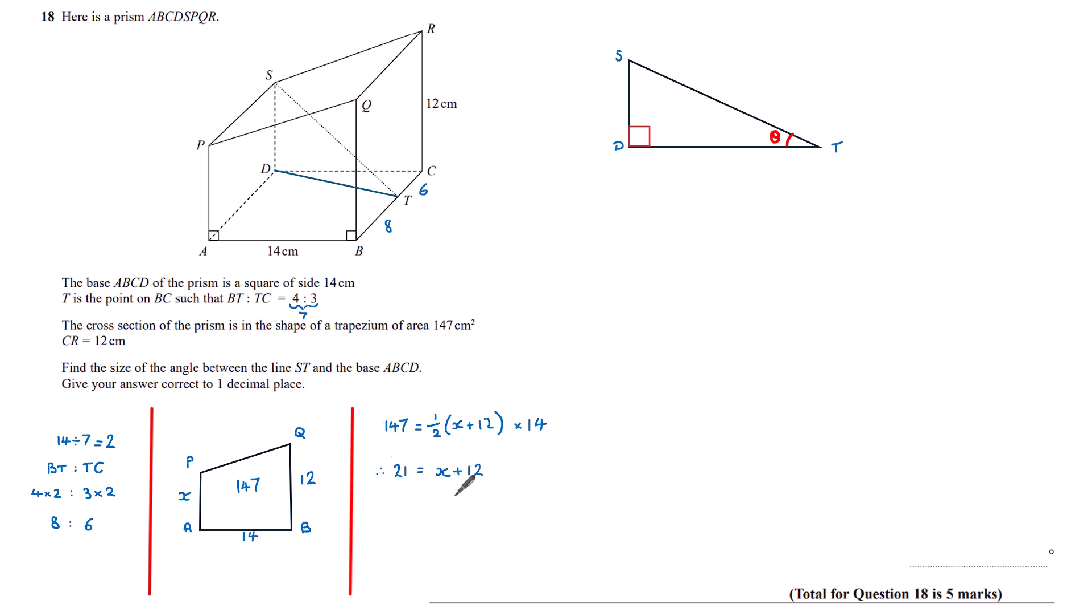21 is equal to X plus 12. Subtracting 12 from both sides gives us this X value. Knowing this value here, PA is 9, is knowing that SD is 9, so I can label that now on my triangle.